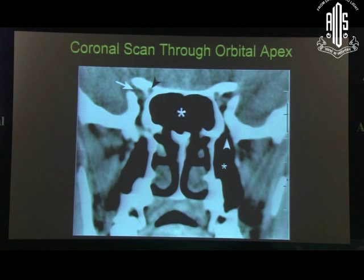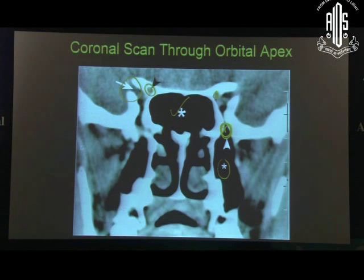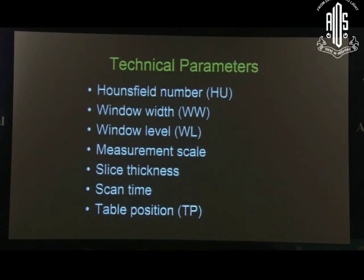You must look at the coronal scan through the orbital apex for very vital details. If the optic canal is enlarged, that means there is optic nerve pathology — a chronic condition such as optic nerve sheath meningioma. The superior orbital fissure is also seen here, and this is the sphenoid sinus, maxillary sinus, and the inferior orbital fissure. So in the coronal scan through the orbital apex you see the superior orbital fissure, inferior orbital fissure, and the optic canal — a very important view for orbital apex or neurotrophic tumours.